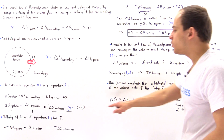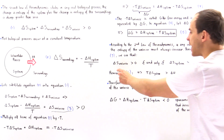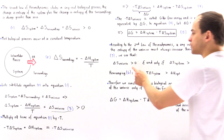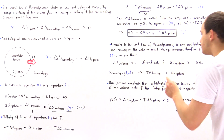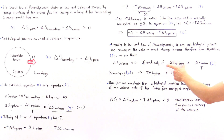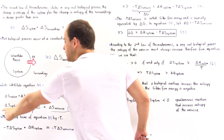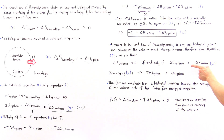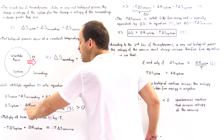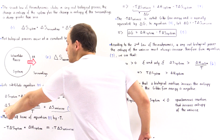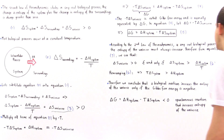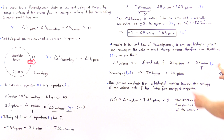Therefore, from equation three, if the delta S of the universe is to be positive, then the delta S of the system must be greater than the term delta H of the system divided by T — because if delta S of the system is the greater number, then their difference will be a positive value. Let's call this inequality six.